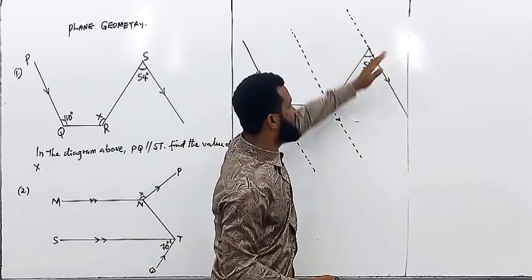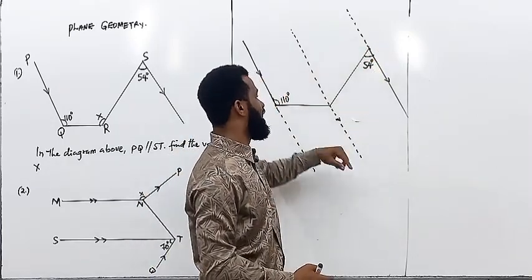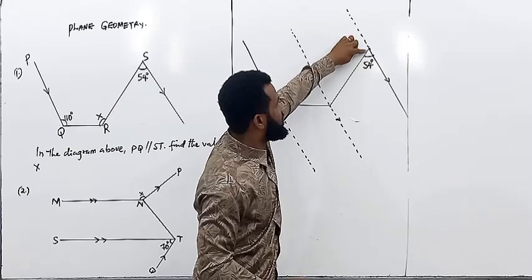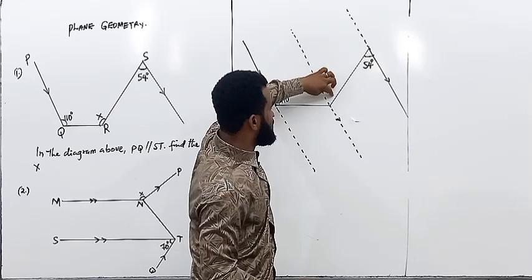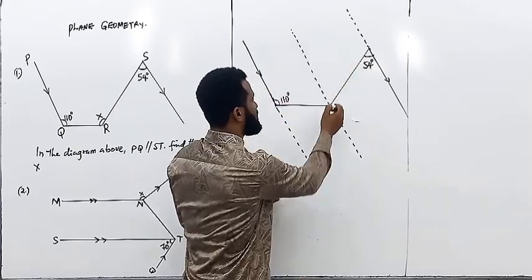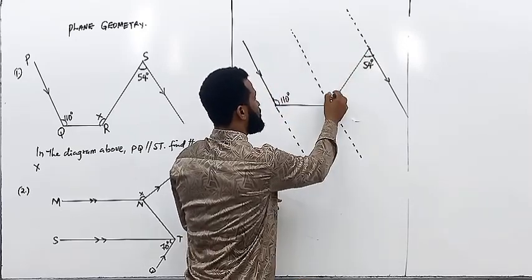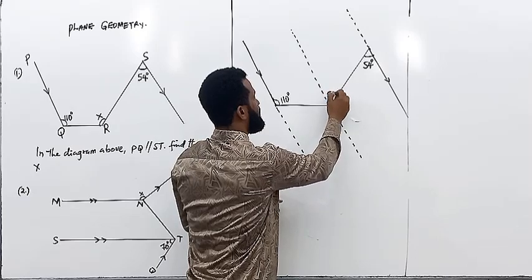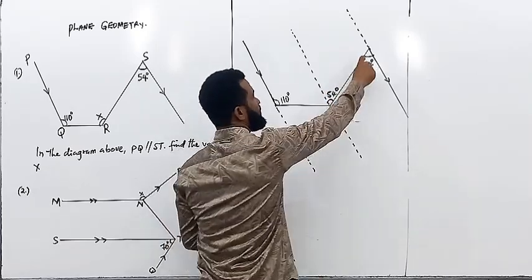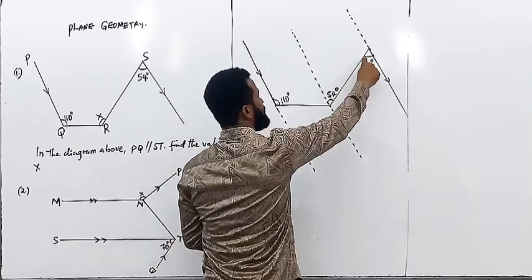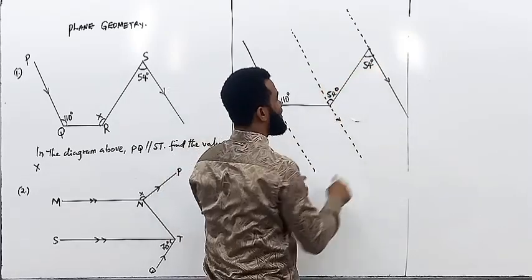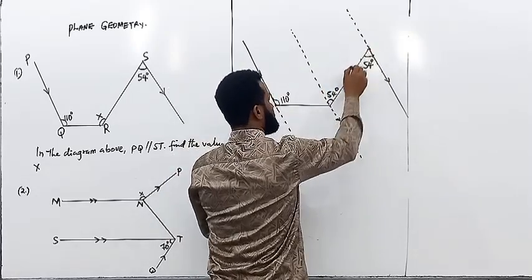If you check very well, this line and this line are parallel, and this line joining them is the transversal. So, in and out — this angle is going to be 54°. It will be transformed to this one because of that Z or N shape. Look at it — in and out, because these two lines are parallel and this is the transversal.